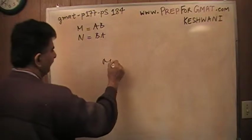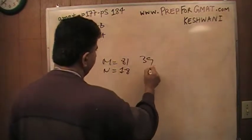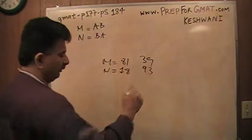For example, if M is 81, then N would be 18. If the other one is 39, this one would be 93 and so on and so forth.